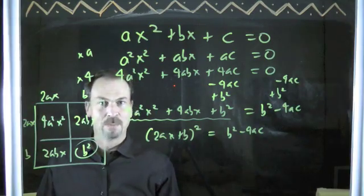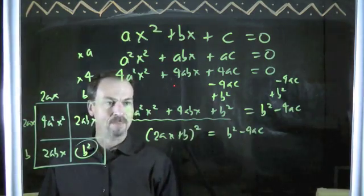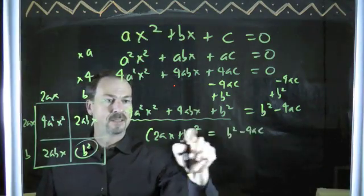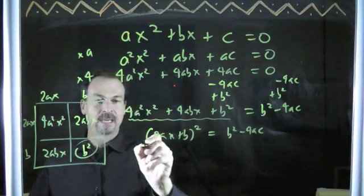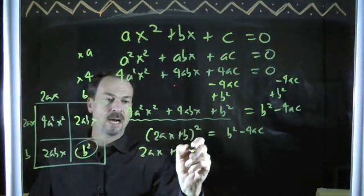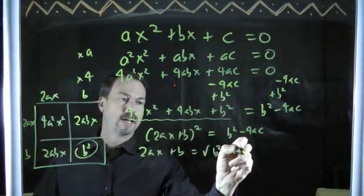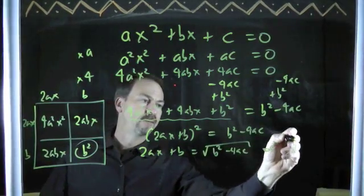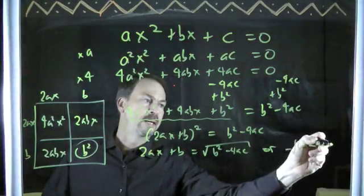Okay, I'm just pushing on with the box method. Everything we've been doing in part 2 just follows on just fine. Okay, let's see. So something squared is b squared minus 4ac. So my something better be either the square root of b squared minus 4ac or the negative version of the square root of b squared minus 4ac.